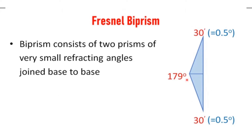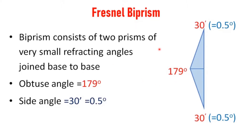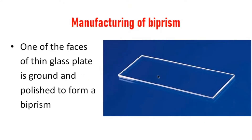Fresnel's biprism consists of two prisms of very small refracting angles joined base to base. The small refracting angle is 0.5 degrees on each side, which is almost 30 minutes. When joined, the obtuse angle at the center is 179 degrees. The obtuse angle exists between 90 to 180 degrees, and the acute side angle is 0.5 degrees.